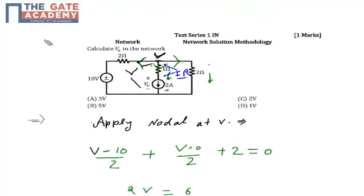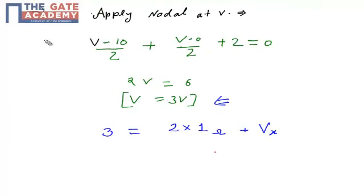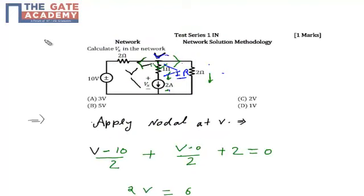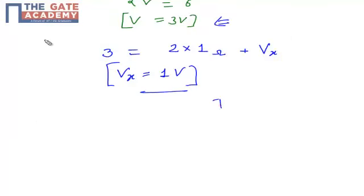In this branch, we have a 1-ohm resistor and a current source. Across the 1-ohm resistor, the current is 2 ampere, so the voltage drop must be 2 volts (2 × 1). The overall voltage drop equals the node voltage V, which we calculated as 3 volts. Applying KVL: 3 = 2×1 + Vx. So Vx = 1 volt. The entire branch has a voltage drop of 3 volts; across the 1-ohm resistor we have a voltage drop of 2 volts; so across the current source we have a voltage drop of 1 volt. My answer is option D.